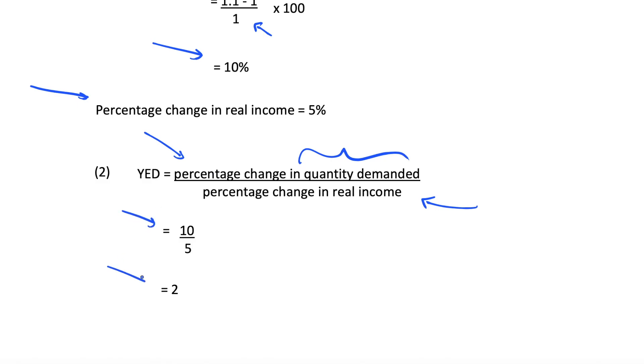And this is equal to 2. A couple of quick things to note: our YED is often going to be a positive number, whereas the PED was often a negative number. This is because an increase in real incomes for most goods is going to cause an increase in quantity demanded. As people have more income to spend, they're going to tend to buy more things. This was different to PED, because an increase in price will tend to cause a decrease in demand for a certain good.